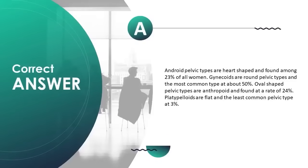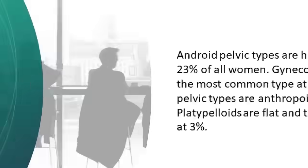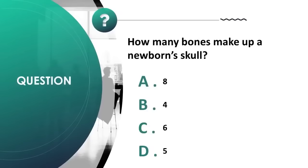Gynecoid pelvic types are round and the most common at about 50%. Oval-shaped pelvic types are anthropoid, found at 24%. Platypelloid pelvic types are flat and the least common at 3%.